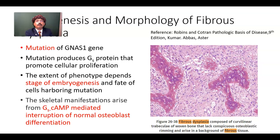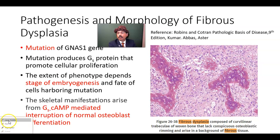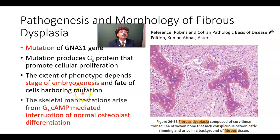Now we will look at the pathogenesis and morphology of fibrous dysplasia. There is mutation of the GNAS1 gene. This mutation produces Gs-alpha protein that promotes cellular proliferation. The phenotype — the expression of the genotype — depends on the stage of embryogenesis and the fate of the cell harboring the mutation. The skeletal manifestation arises from Gs-alpha cyclic AMP-mediated interruption of normal osteoblast differentiation.